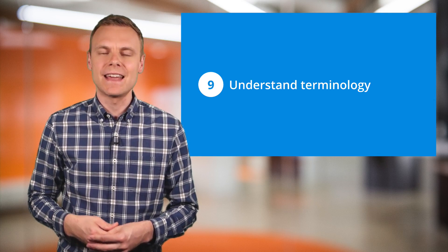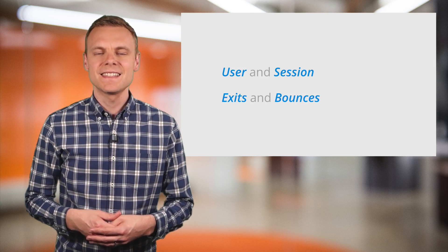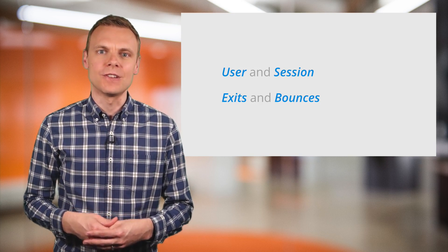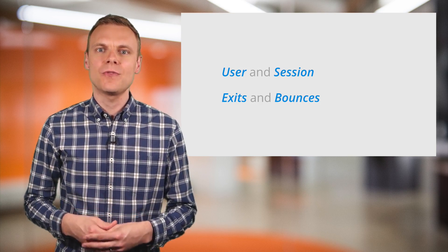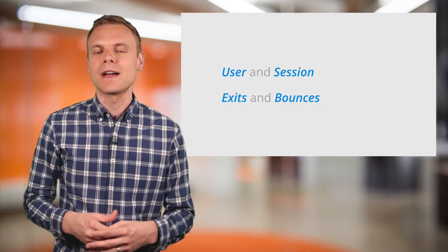Step number nine is to understand important terminology. For example, knowing the difference between a user and a session, or exits and bounces. Understanding what you see in your reports is critical so you can take action based on your data. Since this video is about the steps to master Google Analytics, I won't drill down into lots of different terms, but you can find some great resources in the description below this video, including my Google Analytics glossary.